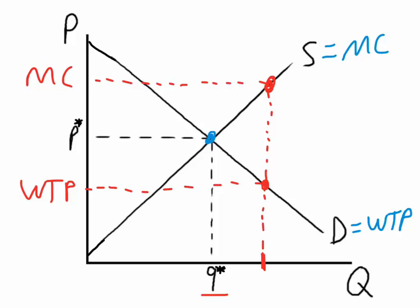All right, so if we were to produce this unit, we would be destroying this much value, the difference between marginal cost and willingness to pay. That's a bad thing.